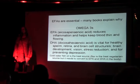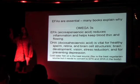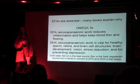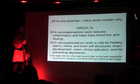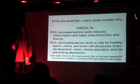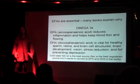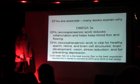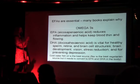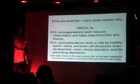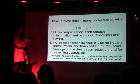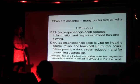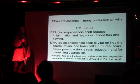Has everybody heard of EFAs — essential fatty acids? They're essential because you need to get them from an outside source. Omega-3s are needed by every cell in your body, especially your brain. Children need them for brain development and absolutely everything. They protect the myelin sheath around your nerves. EPA omega-3 reduces inflammation and helps keep blood thin and flowing. DHA is vital for sperm development, vision, brain cell structure, brain development, stress reduction, and for preventing depression — and there are lots of studies on that.